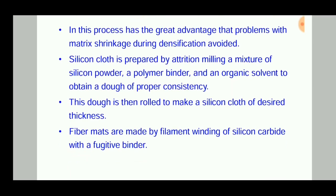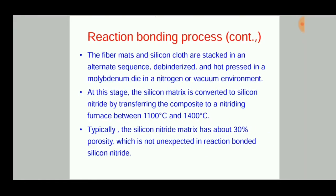Fiber mats are made by filament winding of silicon carbide with a fugitive binder. The fiber mats and silicon cloth are then stacked in an alternate sequence — the mats are stacked either at 0°, or at 0°/45°/90° alternately — so that we can get high strength in the composite stack.